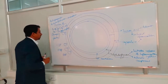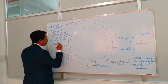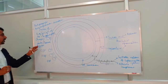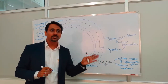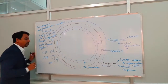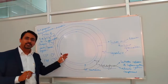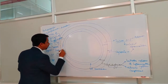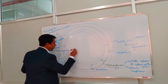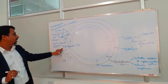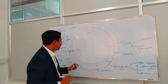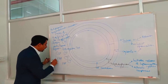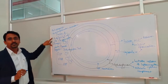The clumping factor is also known as bound coagulase. It remains bound to the surface and leads to formation of clumps when a suspension of Staphylococcus is mixed with plasma. This is the basis of the slide coagulase test. So whenever you get a question about which enzyme is responsible for slide coagulase test, the answer is bound coagulase or clumping factor.